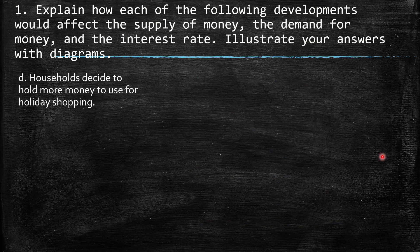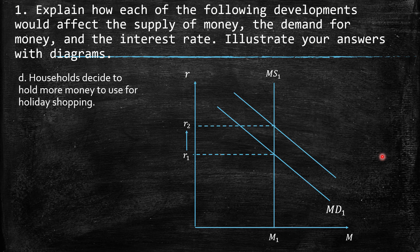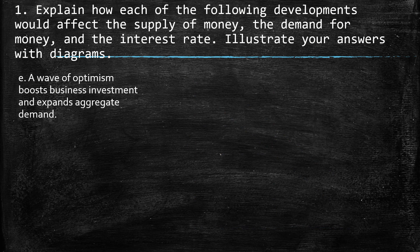d. Households decide to hold more money to use for holiday shopping. We can infer this as an increase in money demand — a shift to the right. As a consequence, since the money supply is not affected, we have an increase in the interest rate.